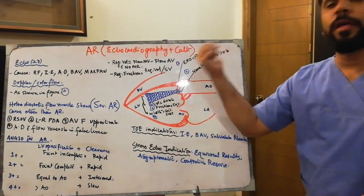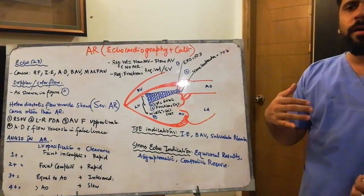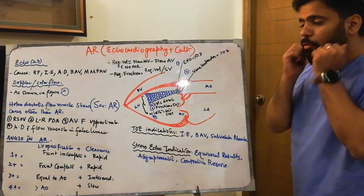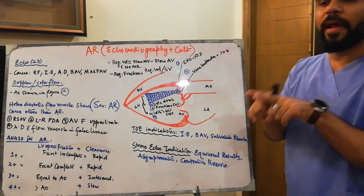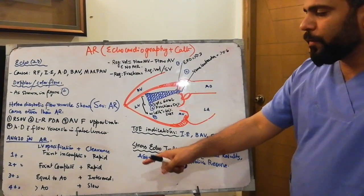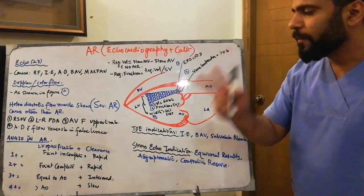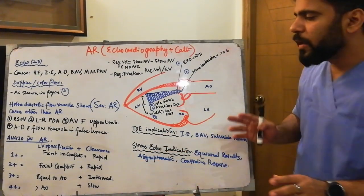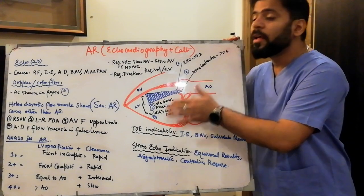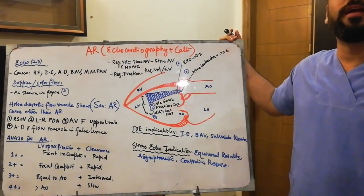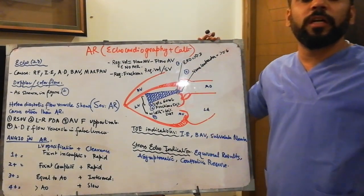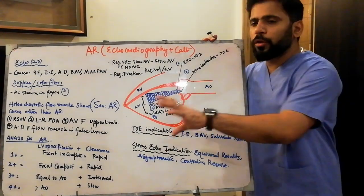In moderate-to-severe AR, the opacification of the LV equals that of the aorta, and clearance is intermediate — not rapid. In very severe AR, the LV opacification is greater than the aorta on aortogram, and clearance takes two to three beats to clear after contrast injection, confirming very severe AR.